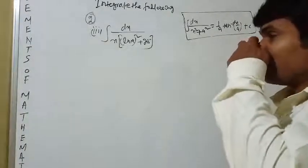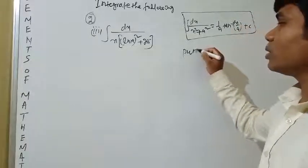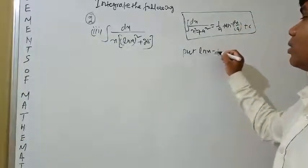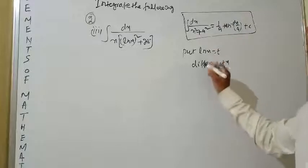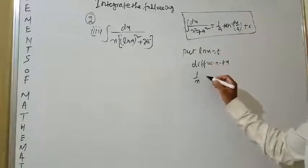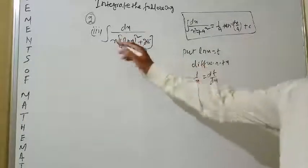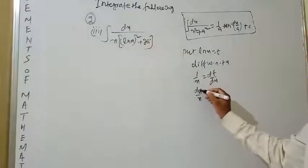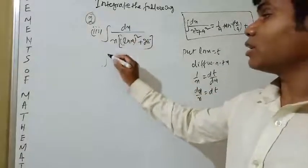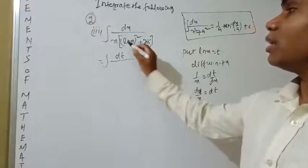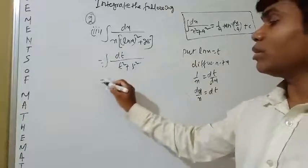The next question is: integration of dx / (x × √(ln²x + 25)). Now put ln x = t. Differentiating with respect to x: derivative of ln x is 1/x, so (1/x) dx = dt/dx, meaning dx/x = dt. Also, 25 = 5².